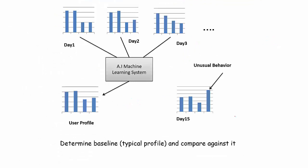Here is a pictorial representation of an anomaly-based system. You observe day one, day two — some pattern like this, which is the typical user profile. But suddenly on day 15, you see unusual behavior where something that has always been less than the others is suddenly more — then you say something unusual is happening.